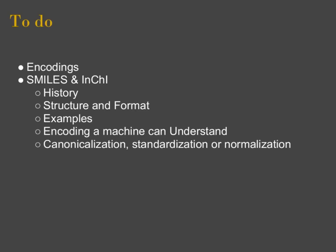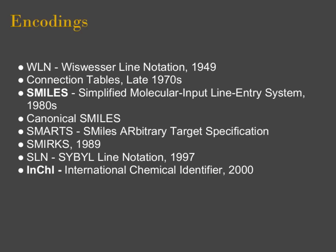And then some of the more popular ones, SMILES and InChI, which are two different types of encodings. We're going to talk about the history of each of those, the structure and the format of both SMILES and InChI. I'm going to give some examples of both SMILES and InChI formats. And we're going to briefly touch on why it's important to have these encodings such that a computer can understand them. We'll also touch a little bit on canonicalization, standardization, or normalization of some of these compounds.